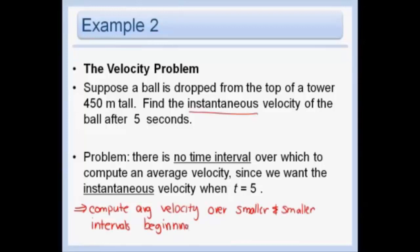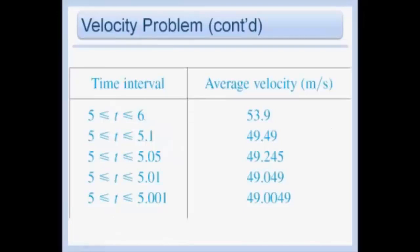You do not need to memorize this equation, but you may remember it from physics: the distance fallen after t seconds is given by s of t equals 4.9t², where s(t) denotes position in meters. So let's look at the time interval between five and six seconds first. The average velocity is the change in position: s(6) minus s(5) over 6 minus 5 — that's just y₂ minus y₁ over x₂ minus x₁, how we typically find slope — and you would do that for each of the time intervals.